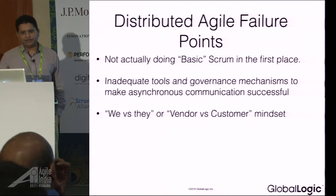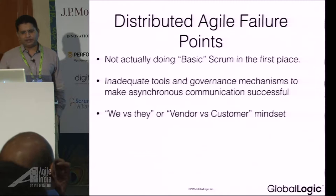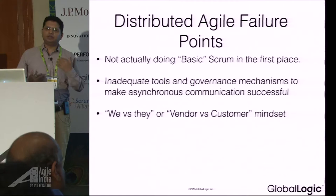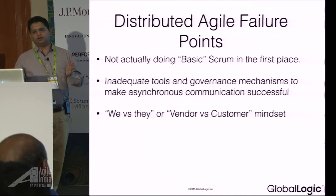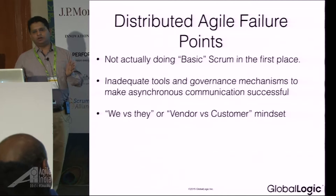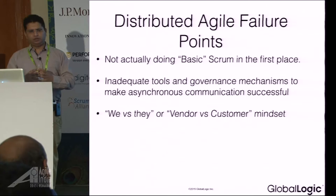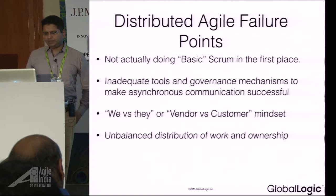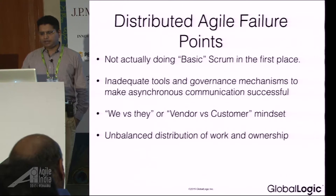This is also a very important point: the 'we versus they' or vendor versus customer mindset. Even though you are working in a distributed fashion, customers think as customers. It's not just a vendor-customer phenomenon — it is a general human tendency. When there is a large gap in communication, you start forming a 'we versus they' kind of culture. Then there is unbalanced distribution of work and ownership, which also creates a lot of problems in distributed Agile.